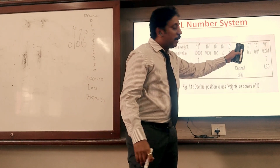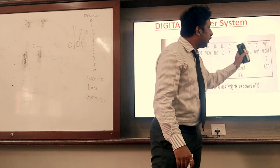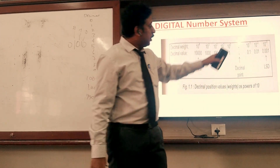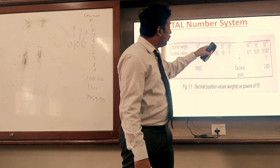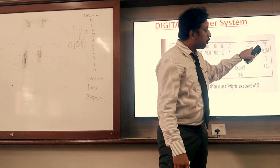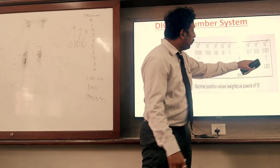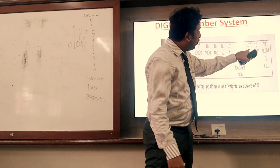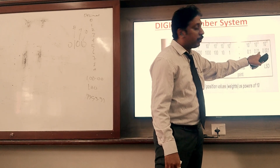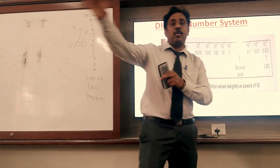So the decimal point to the left carries positive powers, and the decimal point to the right carries negative powers. Left side: 10 to the power of 0, 1, 2, 3, 4. Right side: minus 1, minus 2, minus 3. The equivalent values are: 10 to the power minus 1 is 0.1, minus 2 is 0.01, minus 3 is 0.001.